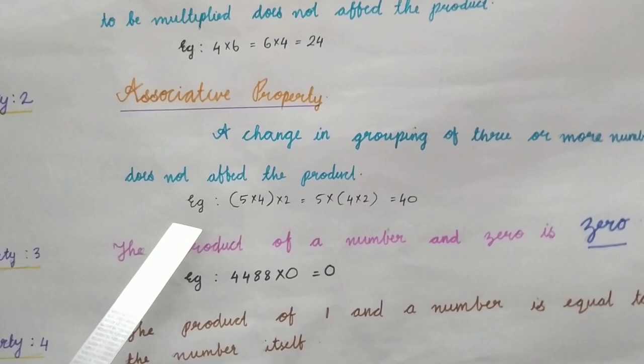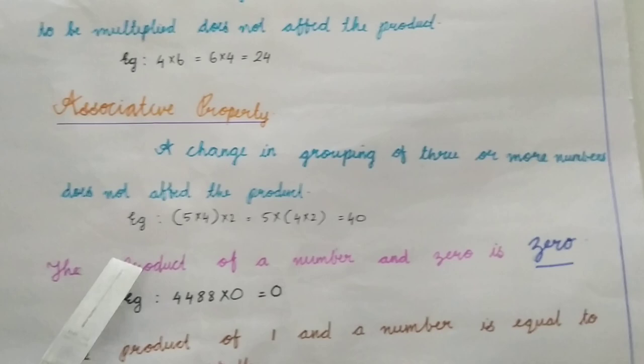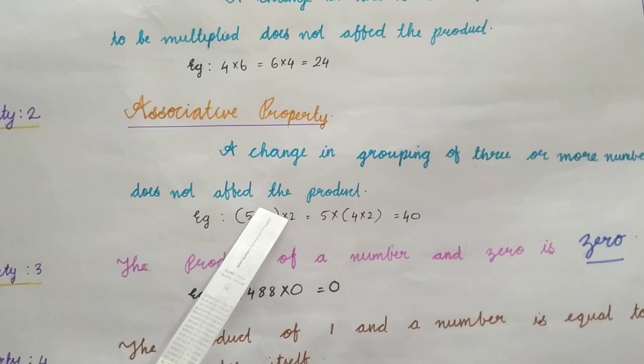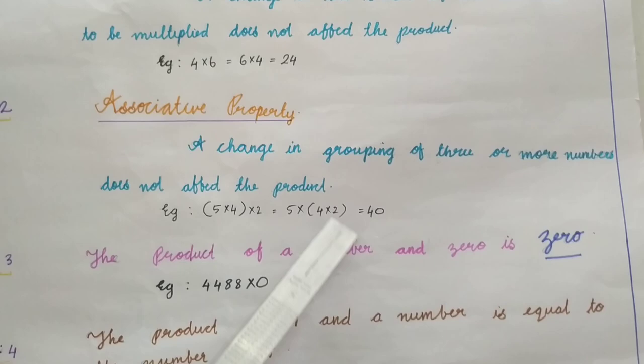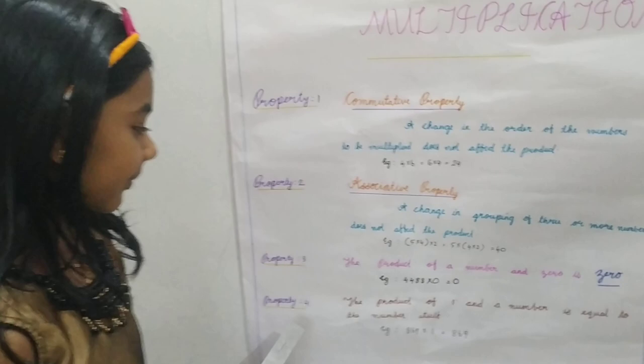Property number 2: Associative Property. A change in the grouping of 3 or more numbers does not affect the product. Example: 5 x 4 x 2 is equal to 5 x 4 x 2 is equal to 40.